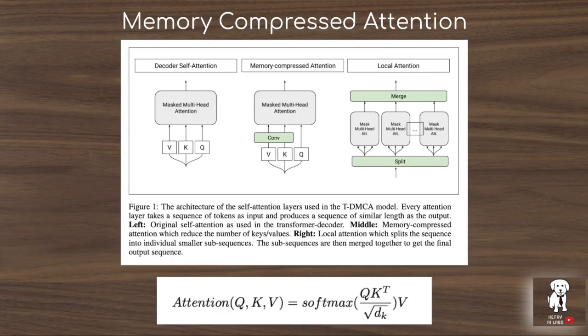One of the trickiest problems with training these transformer language models is the memory bottleneck of the dot product attention computation. When you compute query times the transposed key matrix, you get a length-by-length matrix that is very difficult for memory constraints. With a 16 GB GPU, they can store a sequence length of 4,000 tokens. But using memory-compressed attention, they can increase the input sequence length up to 11,000 tokens.